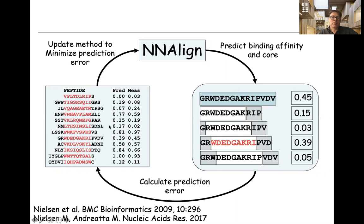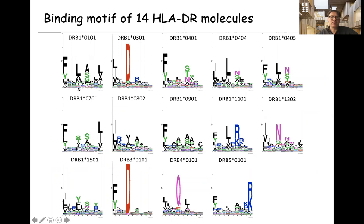This model is called NNAlign. It proved to be very effective — training on binding affinity data, we could characterize the binding motif for all of these HLA-DR beta 1 molecules, and show that they were very different, leading to high diversity of the MHC peptide space presented on each cell line.